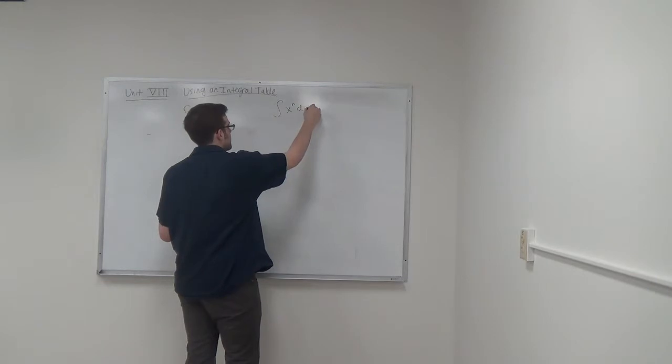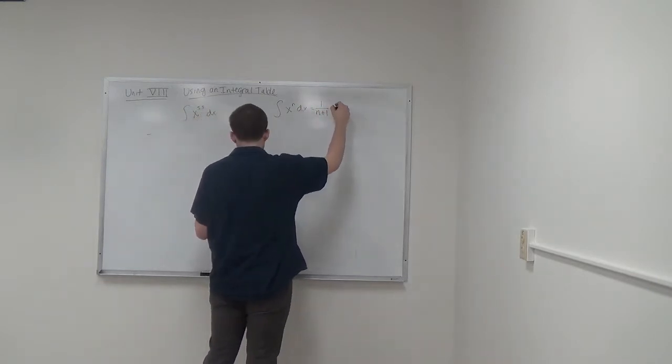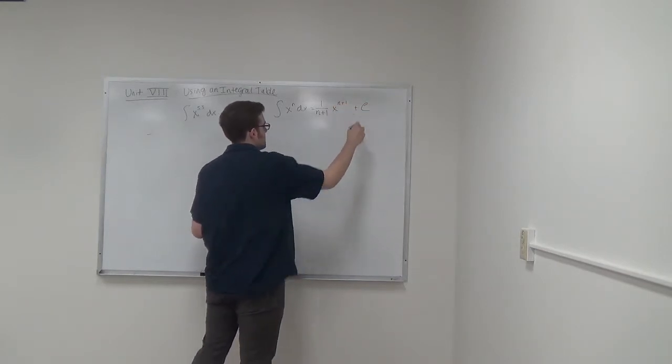The general expression for this in the integration table is x to the n dx is equal to 1 over n plus 1 times x to the n plus 1 plus c.